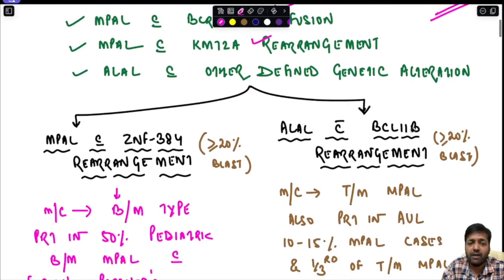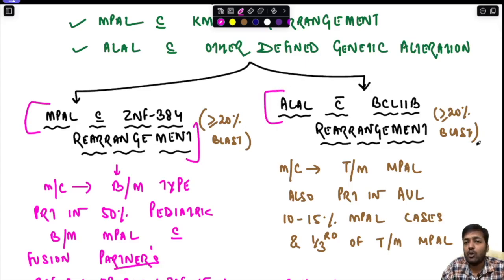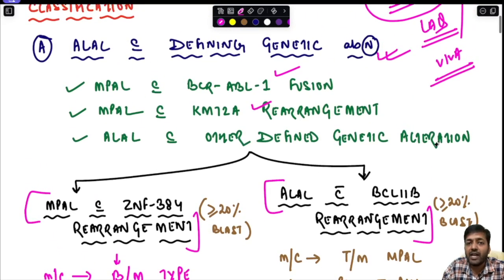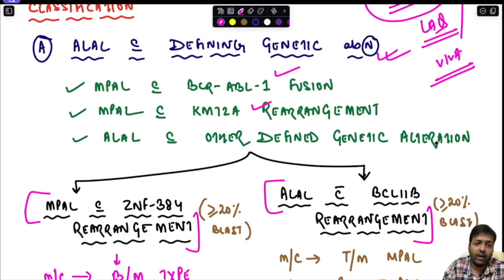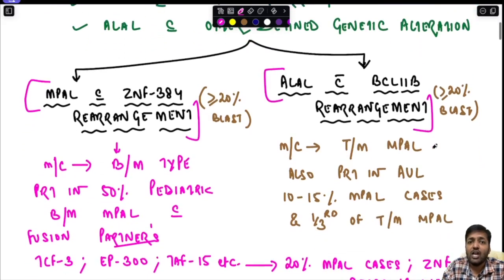This new category includes MPAL with ZNF384 rearrangement and acute leukemia of ambiguous lineage with BCL11B rearrangement. These are the two novel entities introduced in the current WHO fifth edition.